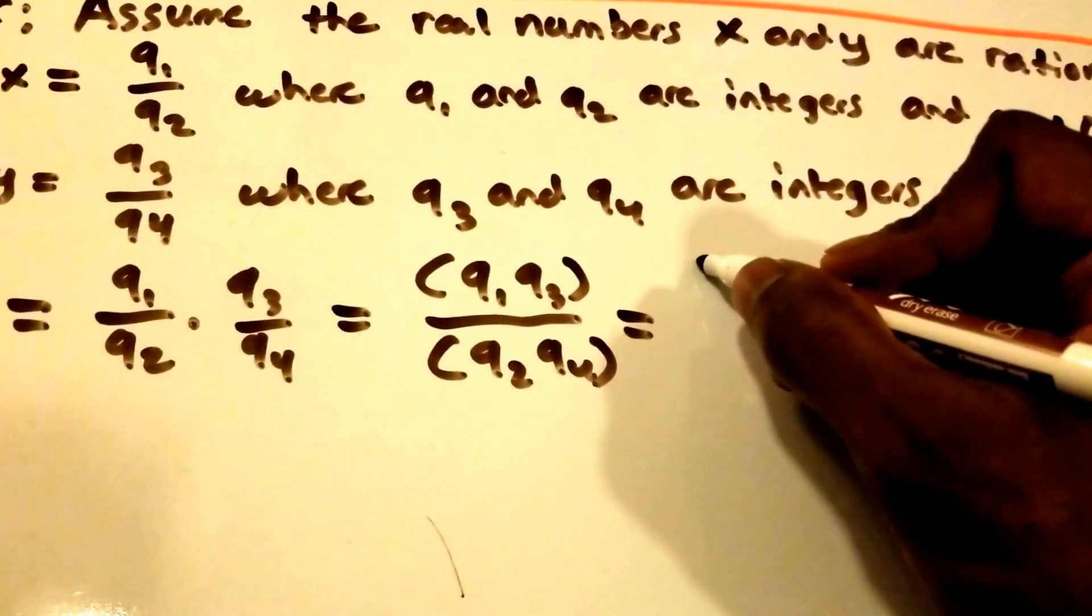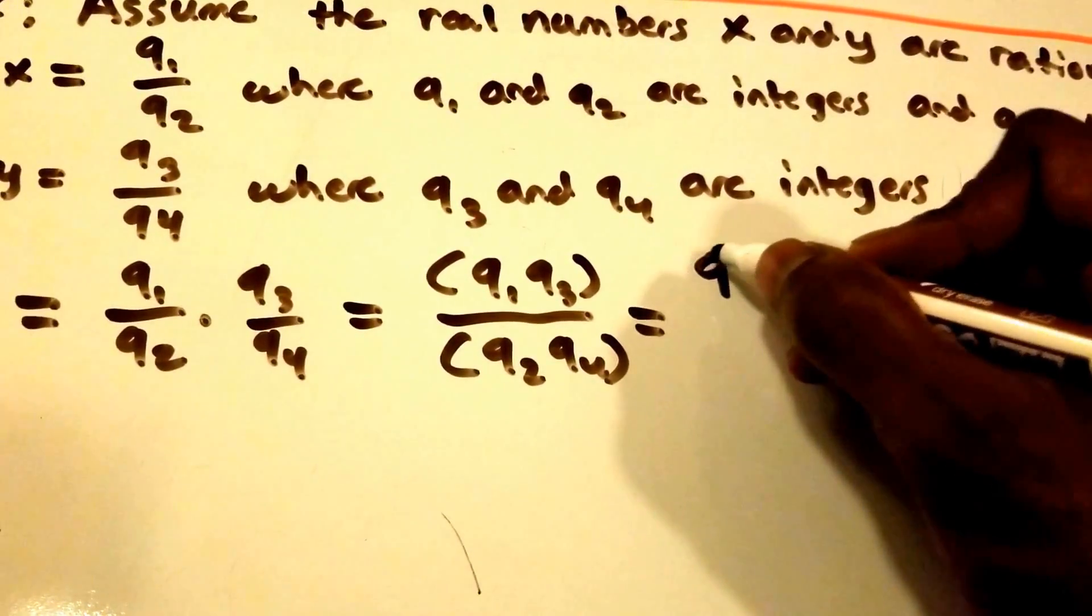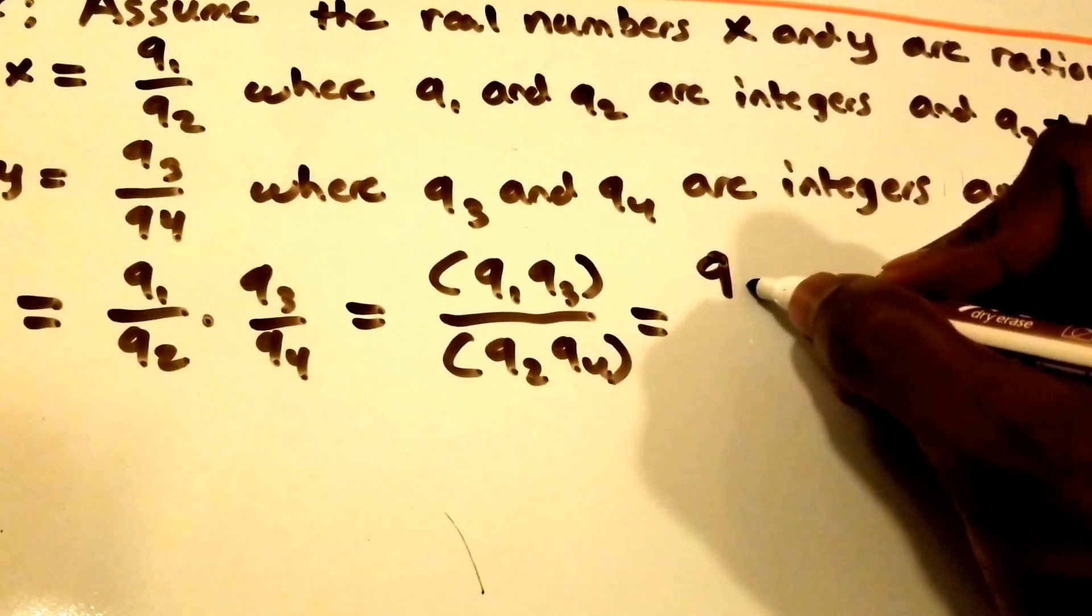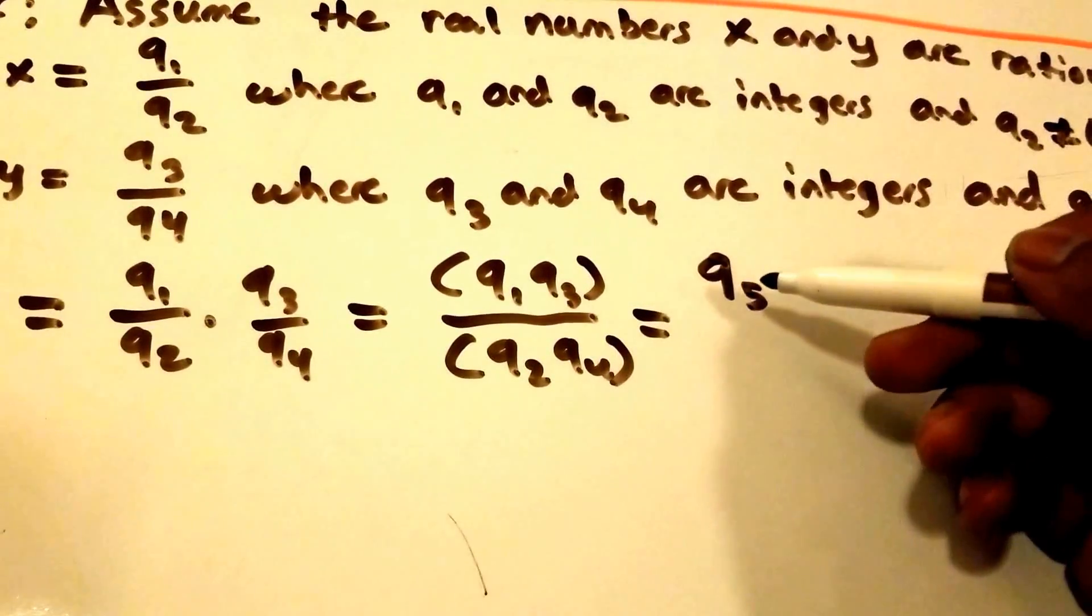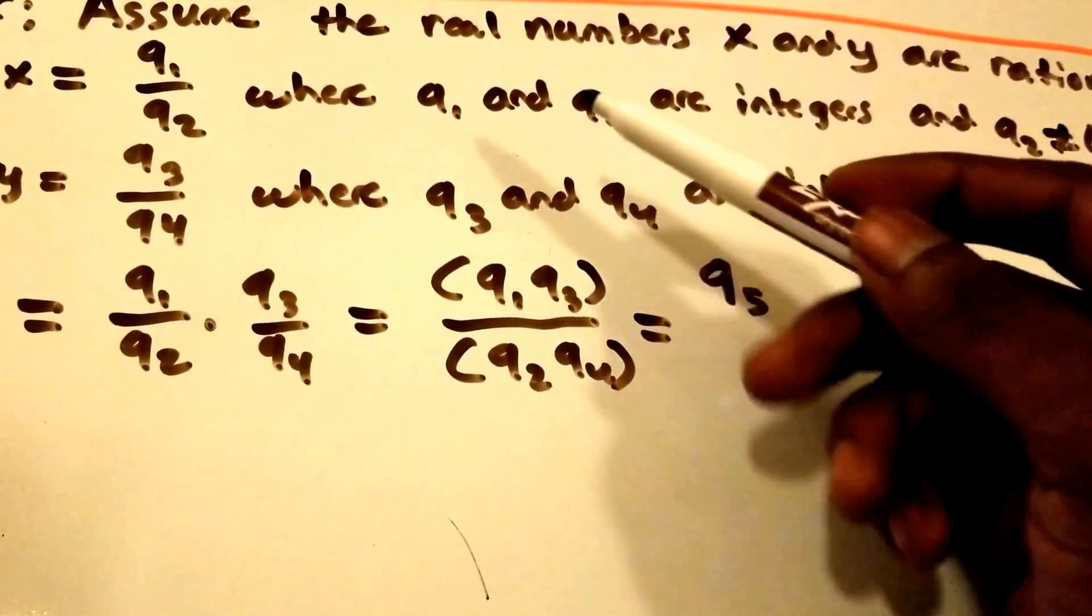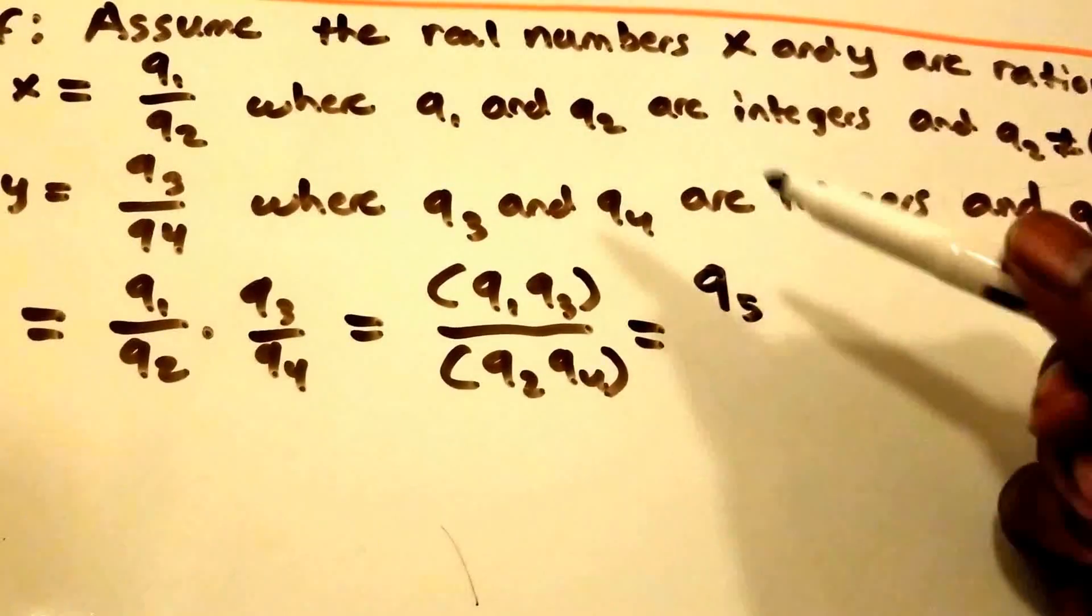We're going to call it q5 and we know it's an integer value because q1 and q3 we stated are integers.